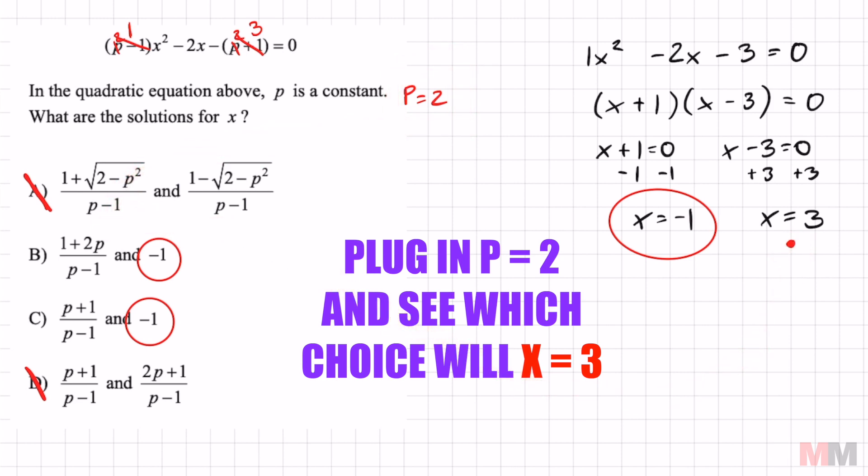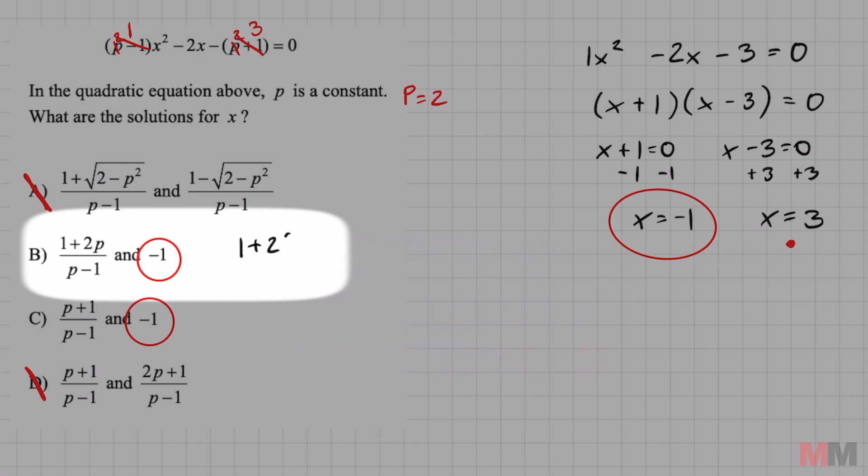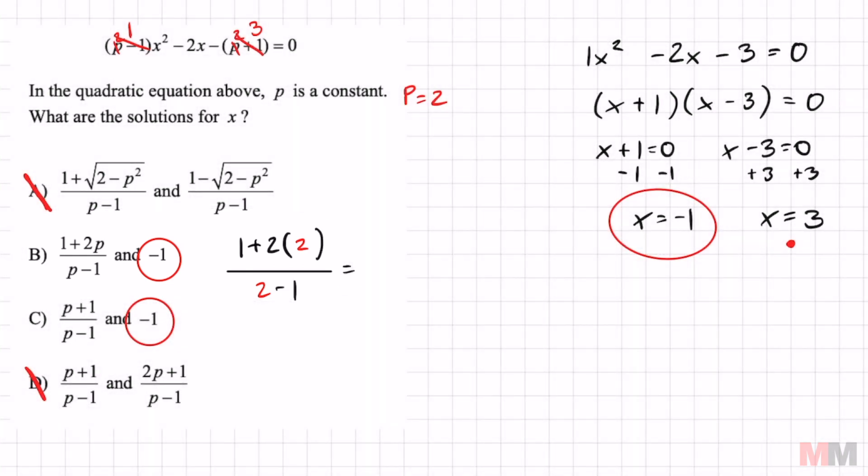Let's go ahead and plug that in for choice B. One plus two times the p value that I chose was two over two minus one. And I can already tell that's not going to be it because one plus two times two is five over one. I'm trying to get three. This equals five. What does that mean? That means my answer has got to be C.